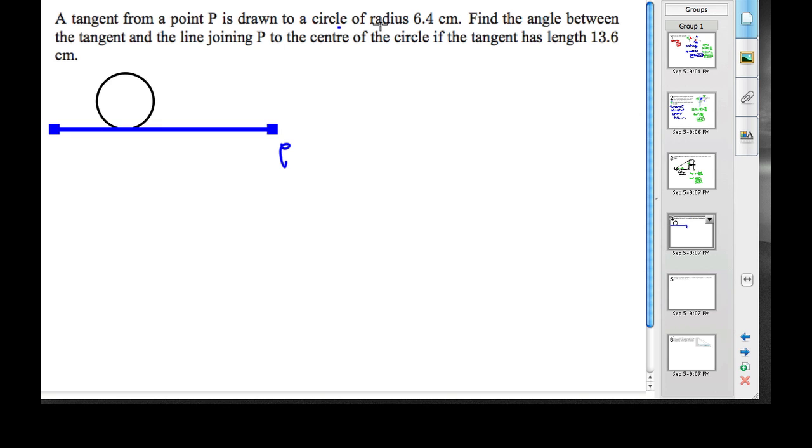Now, the radius of the circle is 6.4. So let's label that 6.4. That's not a very good 6. 6.4 centimeters.